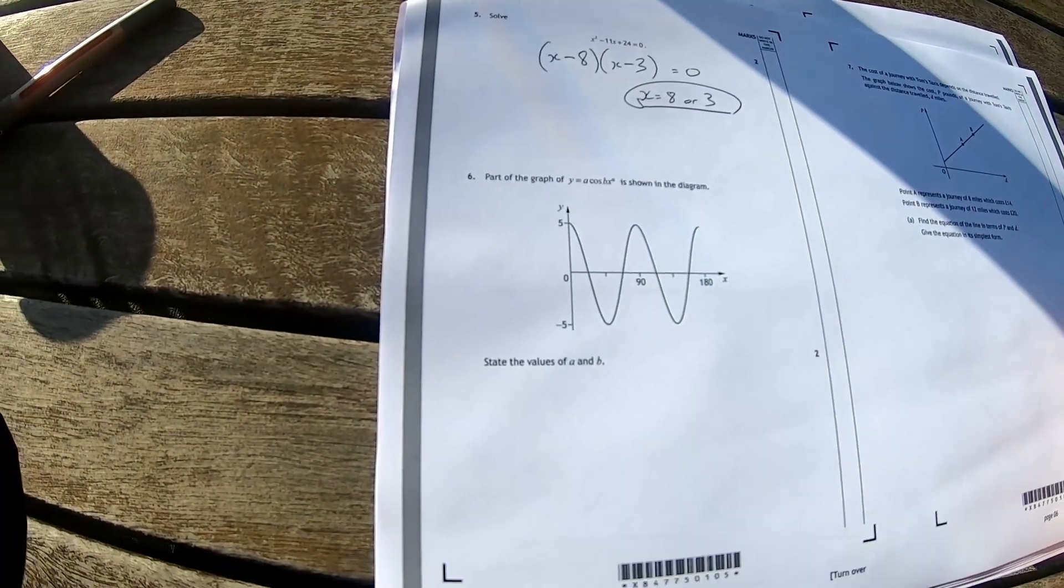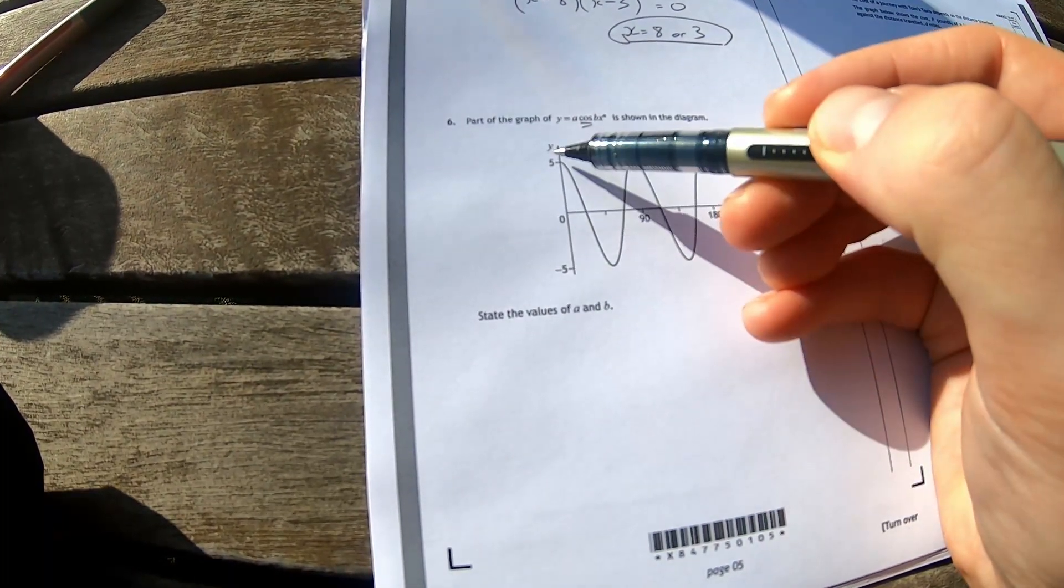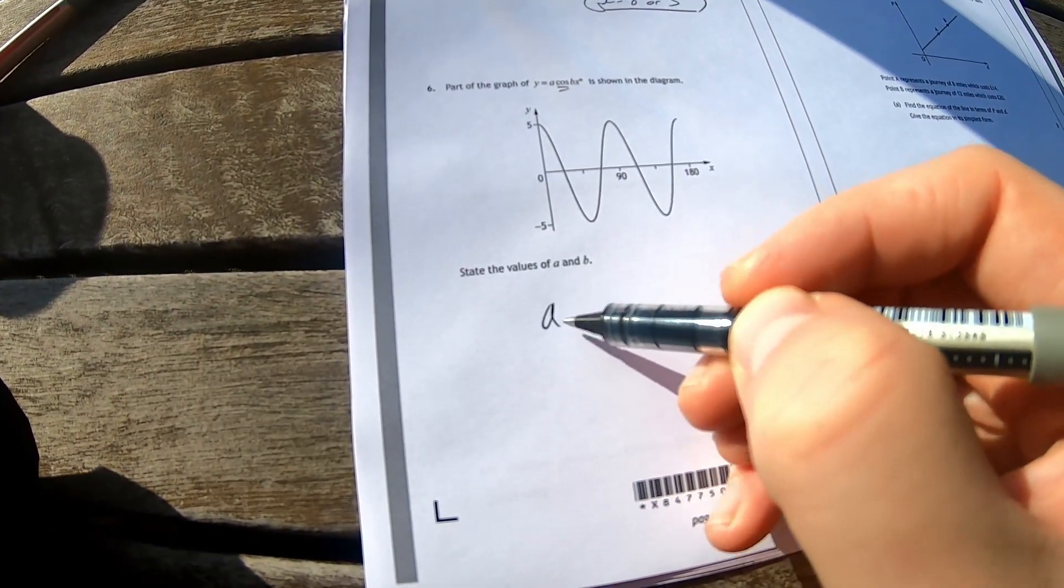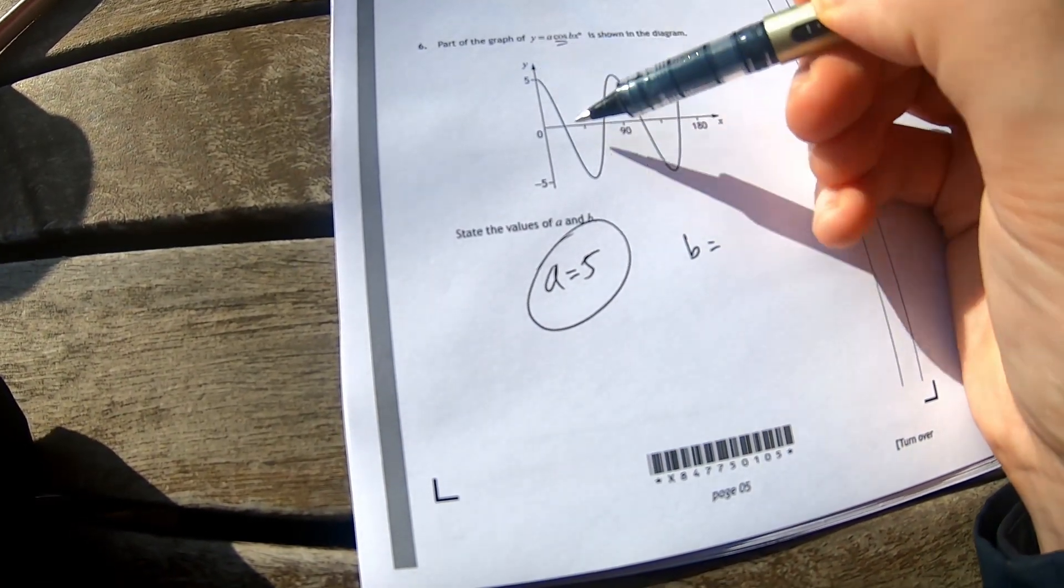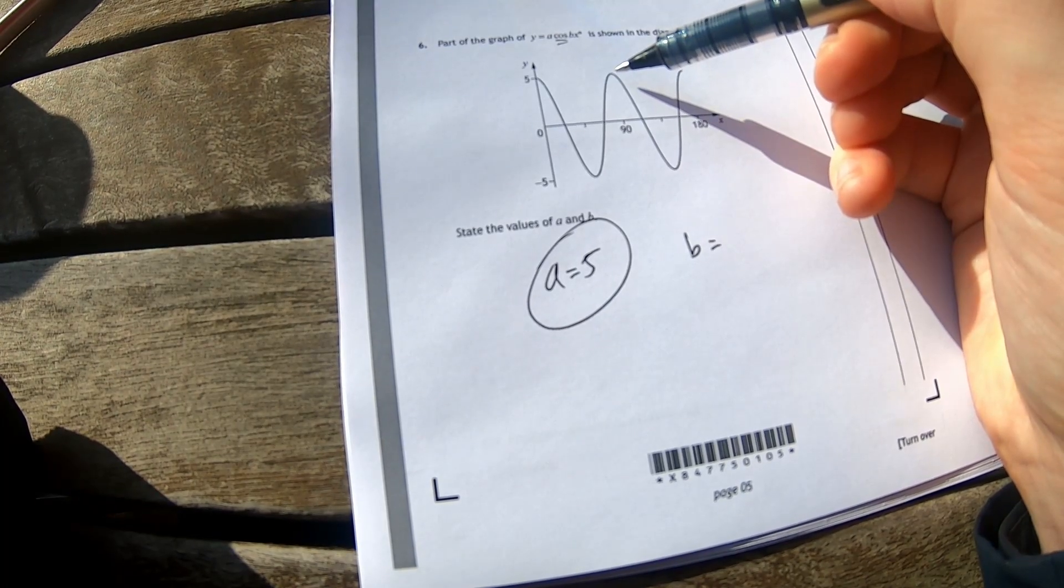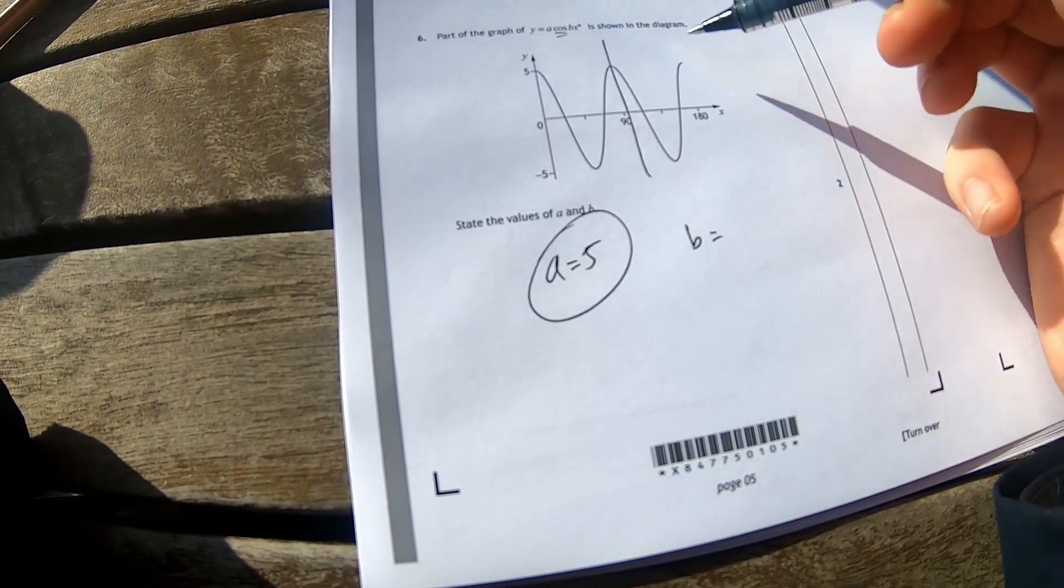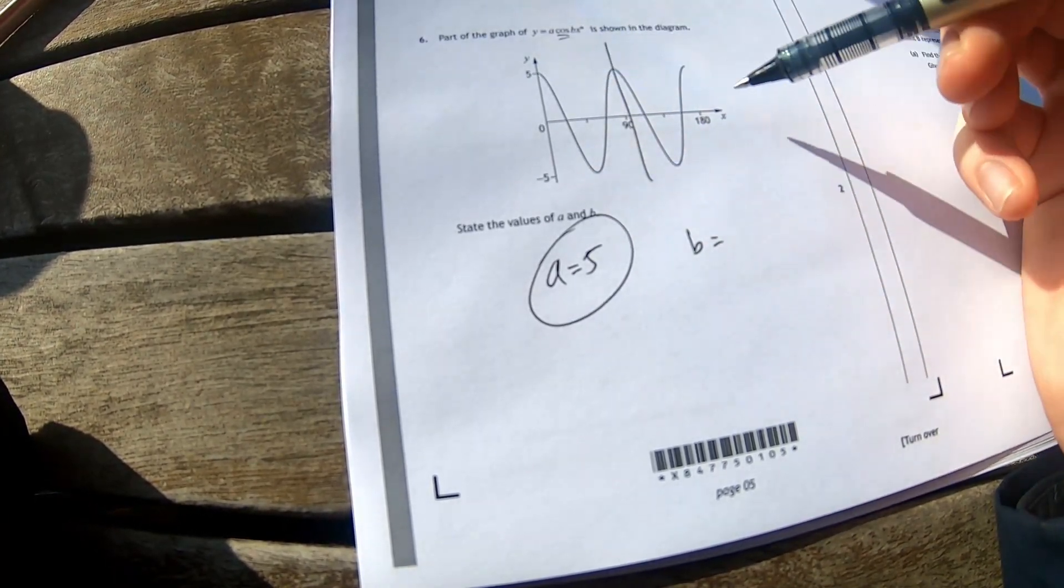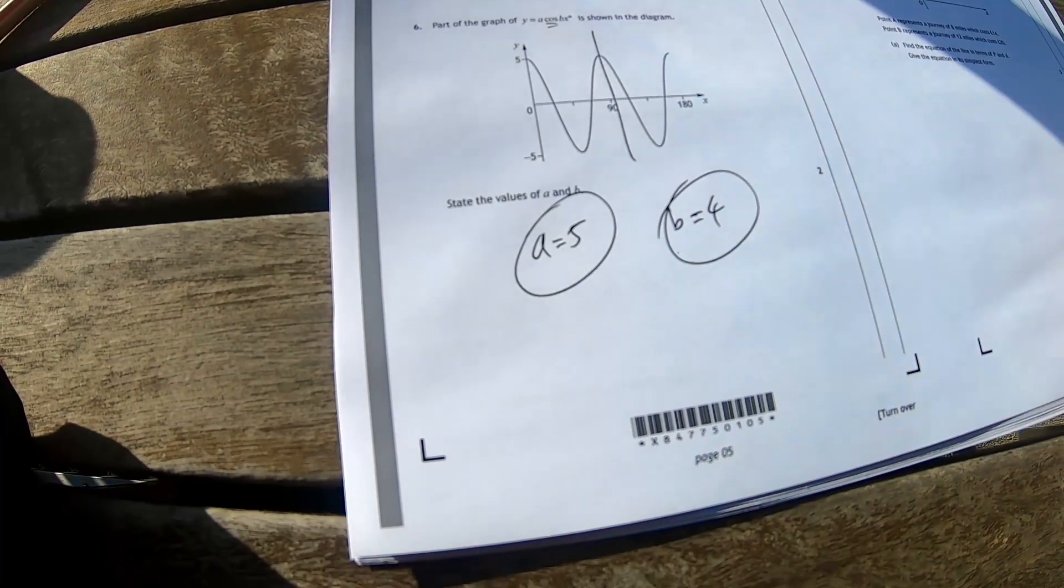Part of the graph is shown in the diagram. State the values of a and b. Cosine goes from minus one to one, it's times by a. A is five obviously. B is clearly one. No wait, sorry. It's supposed to do that over a 360 degree time frame. It's doing it over 90. So therefore b is four. Easy.